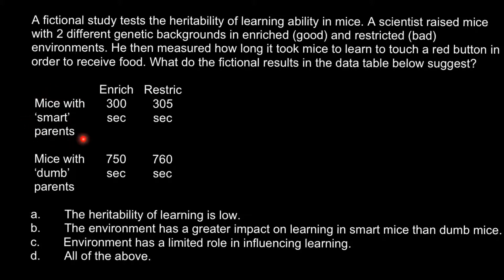As you see, one mouse with a good genetic background shows much better results in pressing the button than a mouse with a bad genetic background. It needs almost more than twice less time than this mouse. But also we see that when we change the environment, it almost doesn't have an influence, and in this example, the same thing.